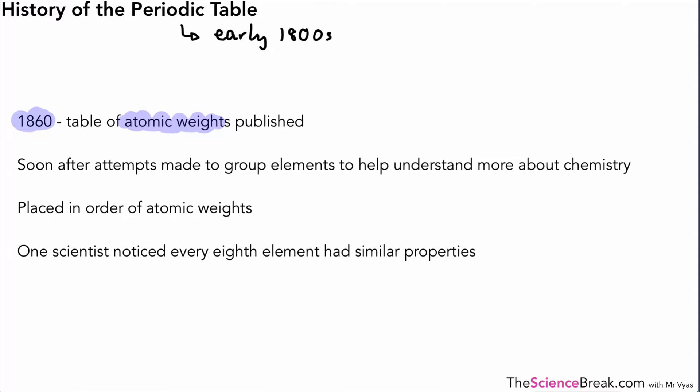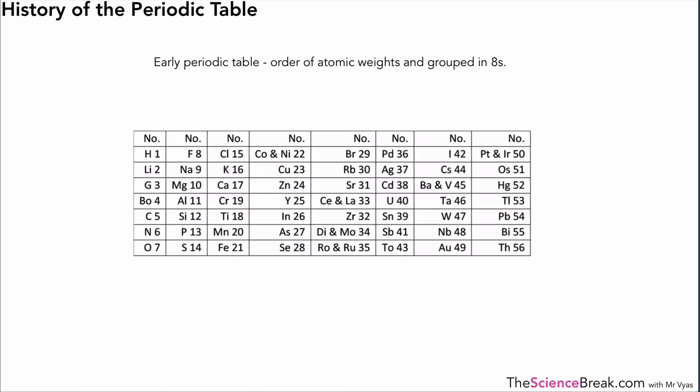One way to group the elements was done by grouping them by atomic weights. Soon after that was done, there was a scientist called John Newlands who discovered that about every eighth element there were similar properties. You could put them in order of atomic weights but you could also see similarities with every eighth element. At that time there were about 50 elements that had been discovered and as we know nowadays there's over a hundred elements.